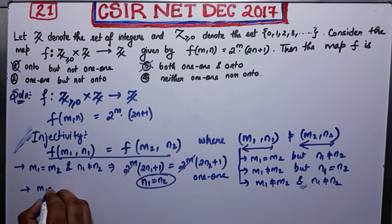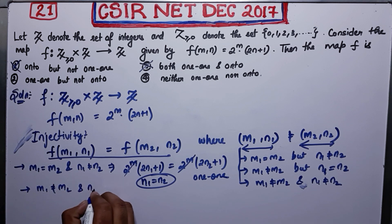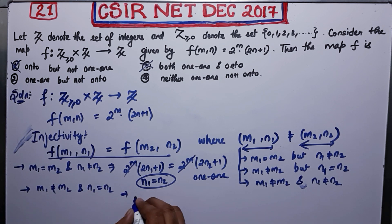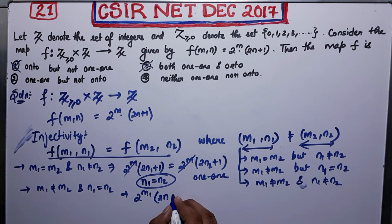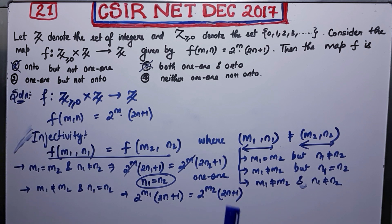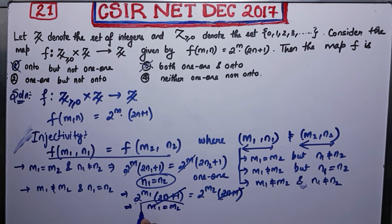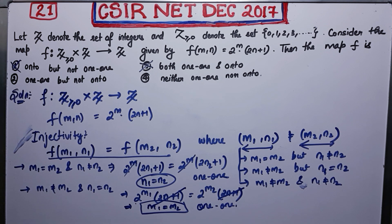Case 2: suppose M1 ≠ M2 and N1 = N2. Writing N instead of N1 or N2 since they are equal, the factor (2N+1) is non-zero so we can cancel it from both sides, giving 2^M1 = 2^M2. Applying log to both sides gives M1 = M2, a contradiction. So the map is one-one in this case too.